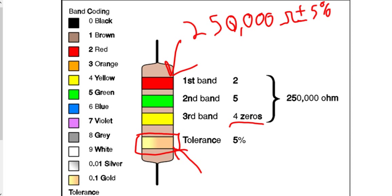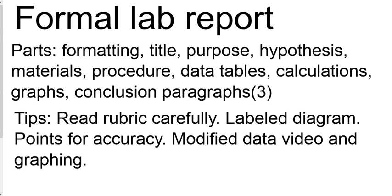The 5% means that it's 250,000 plus or minus 5%. That just tells you how well these were manufactured. It might take a little bit of practice. You don't need to memorize this. I will provide you with the key, but you will need to be able to calculate the correct value of the resistor for the